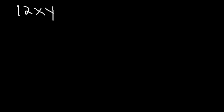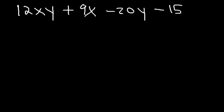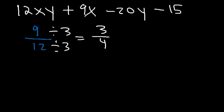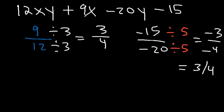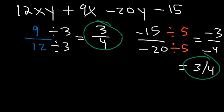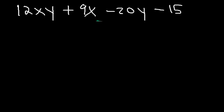Consider this problem: 12xy plus 9x minus 20y minus 15. Let's verify: 9 divided by 12, reduced by dividing by 3, is 3 over 4. Negative 15 over negative 20, reduced by dividing by 5, is negative 3 over negative 4, which is 3 over 4. The ratios between the first two and last two terms are the same, so we can factor by grouping.